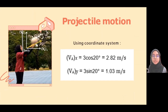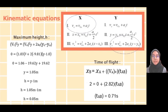The initial velocity of the ball is 3 meter per second. The velocity can be divided into two components: the X component and the Y component. Using the coordinate system, we find the velocity of the X component is 2.82 meter per second, and the velocity of the Y component is 1.03 meter per second. Next, we use kinematic equations to solve for maximum height and time of flight. To find the maximum height, we use the third equation from the Y component. The velocity of the Y component at point C is 0. Using the formula, we get a value of 0.05 meter.